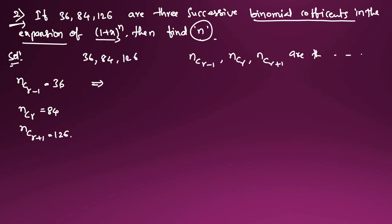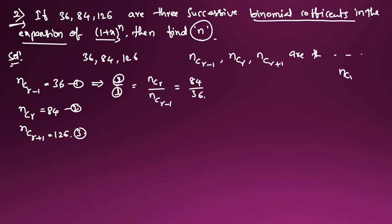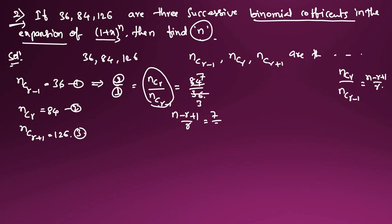Taking the ratio of the second to the first: nCr / nC(r-1) = 84/36 = 7/3. Using the formula nCr / nC(r-1) = (n - r + 1)/r, we get (n - r + 1)/r = 7/3. Cross multiplying: 3n - 3r + 3 = 7r, which gives equation (4): 3n - 10r + 3 = 0.